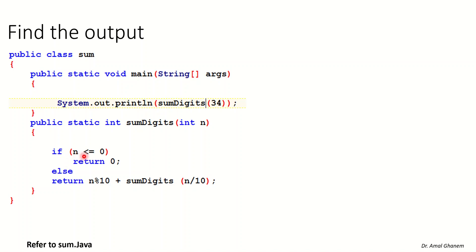We have: if n is less than or equal to 0, we return 0. Otherwise, we return n modulus 10 plus someDigit(n / 10). So the base case — if you reach 0, this is the end and you return 0. Otherwise, you return n modulus 10 plus a recursive call, passing n divided by 10.